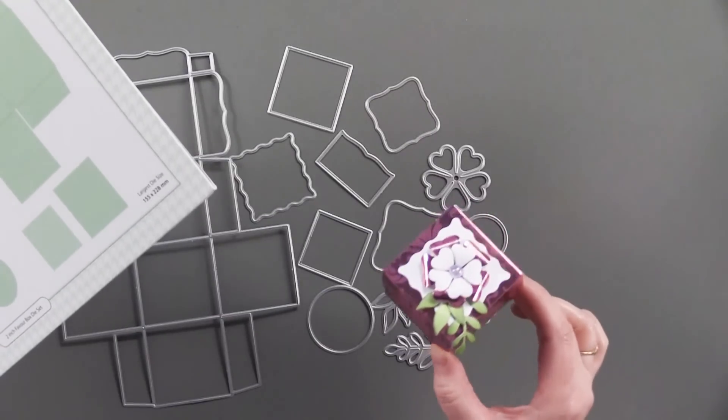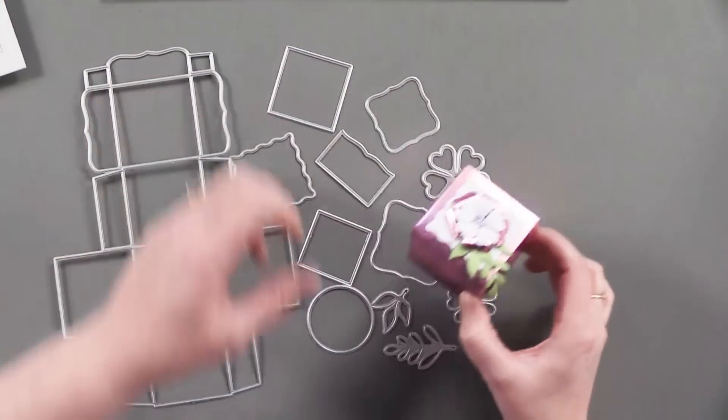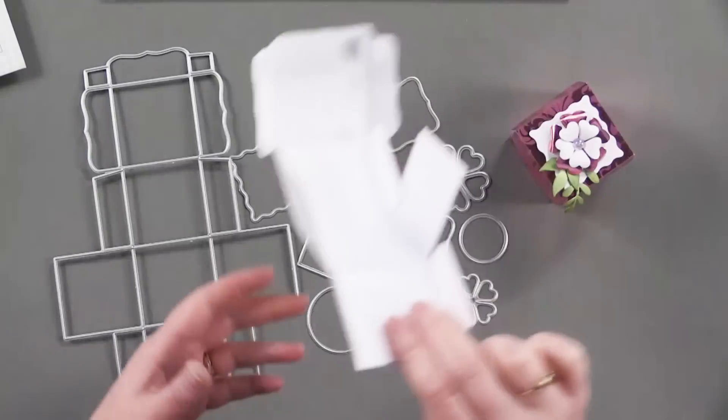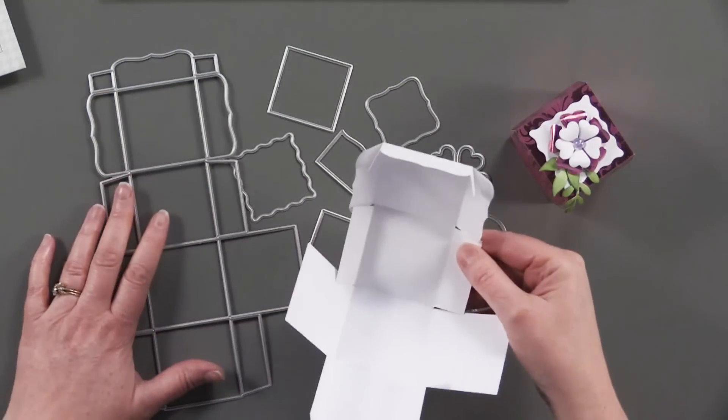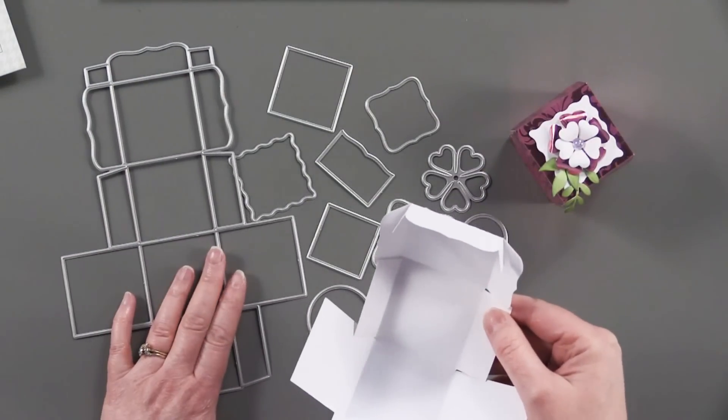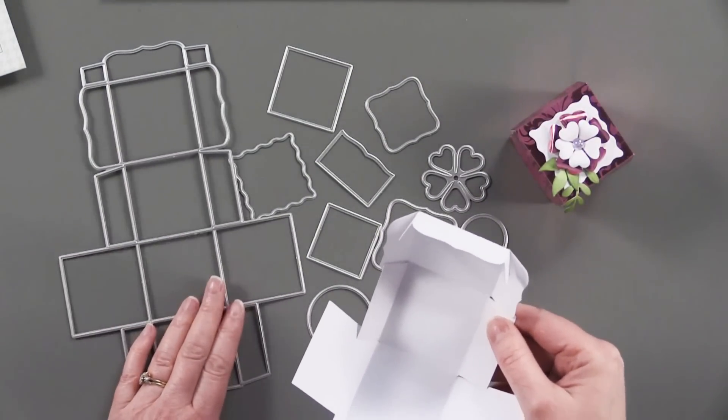So I've got a few different designs to show you here. Let me first show you how these boxes work. It just couldn't be easier. It comes with a box die. This will fit through any of your die cutting machines, the Big Shot, the Gemini, what have you.